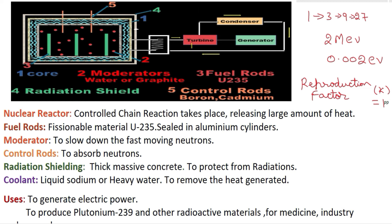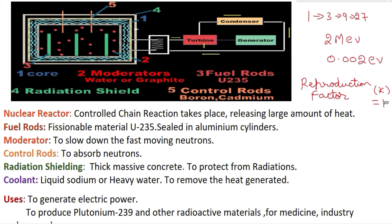In all three — hydroelectric power stations, windmills, and nuclear reactor — the turbine and generator are common. The only difference is how the turbines are rotated. In a hydroelectric power station, it is the water collected at a large height that rotates the turbines. In wind power, it is the wind that rotates the turbines. Finally, a current is generated in the generator.